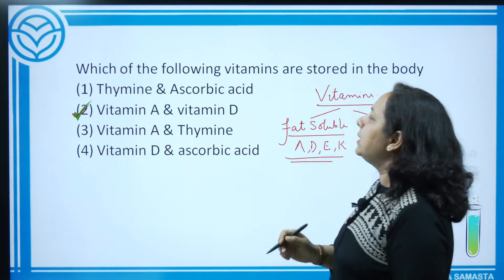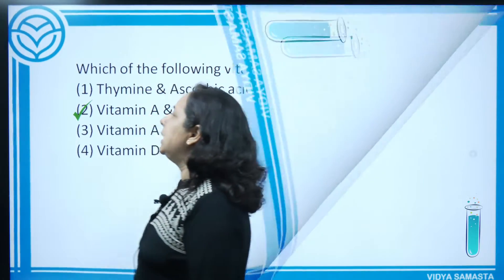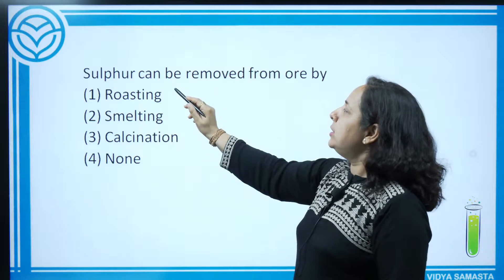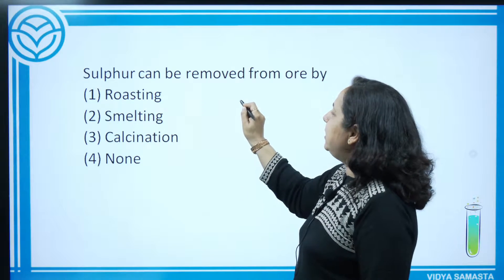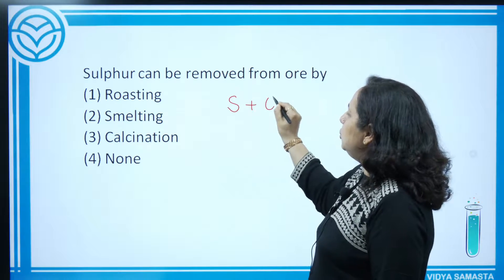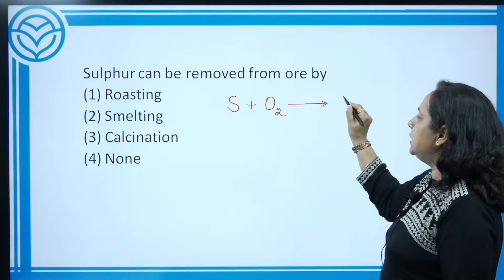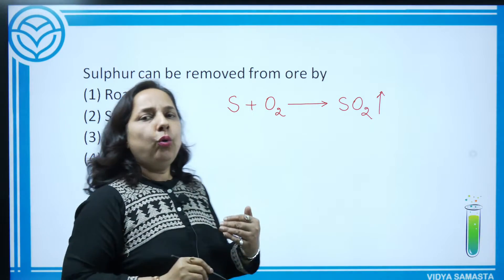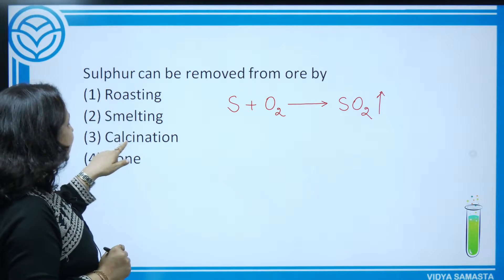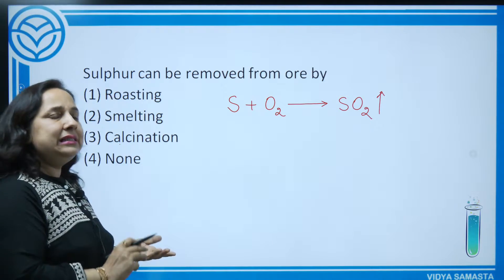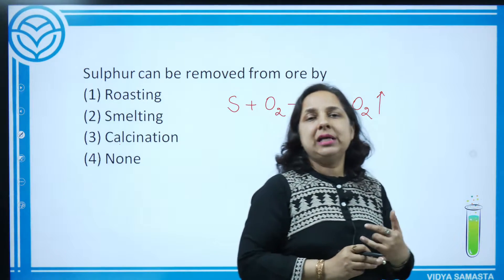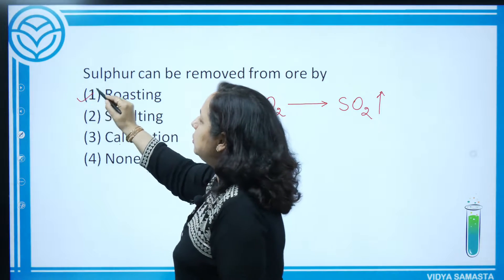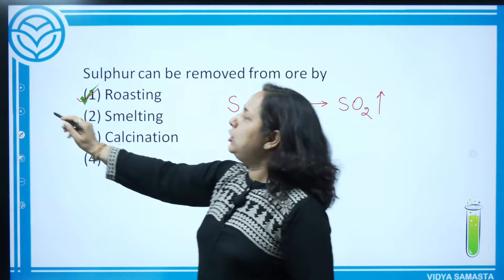Next question involves ore — so it's from metallurgy. Sulfur can be removed from ore by roasting, which is heating the ore in the presence of oxygen — sulfur becomes sulfur dioxide and is removed. Smelting is heating ore with carbon for reduction. Calcination is heating ore in the absence of air. Metal sulfide ores are heated in the presence of air to remove sulfur as SO₂. Correct answer: roasting.